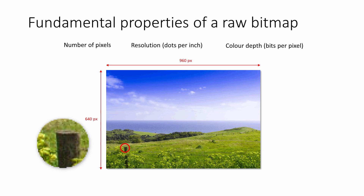In the previous video of this series, you also saw that we can calculate the amount of memory a bitmap needs by multiplying the number of pixels by the number of bits allocated to each pixel. For example, a bitmap measuring 960 by 640 pixels with a colour depth of 8 bits per pixel will take up 600 kilobytes of memory.